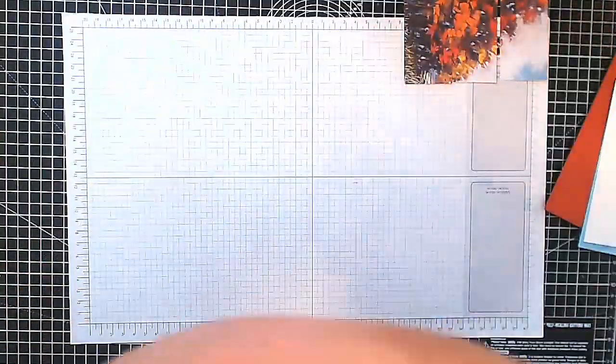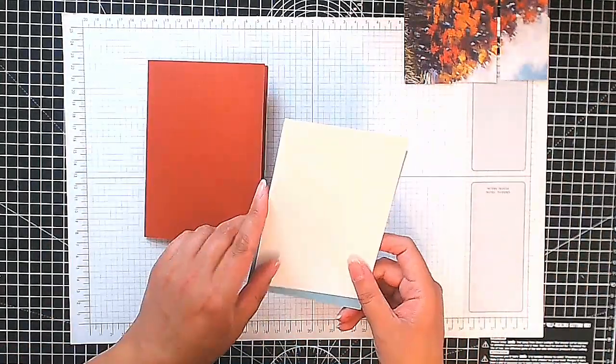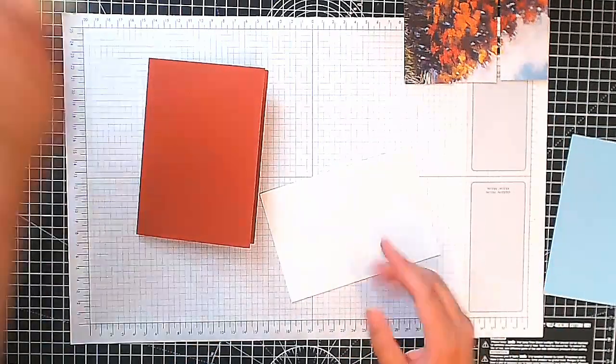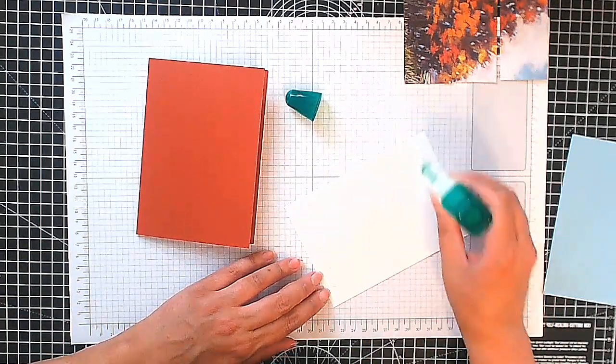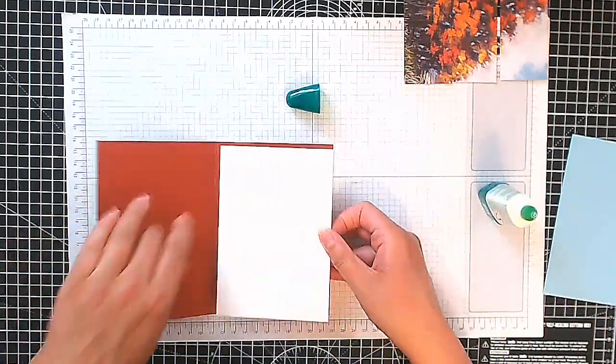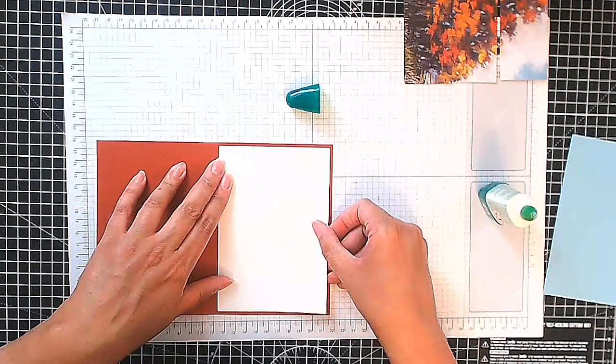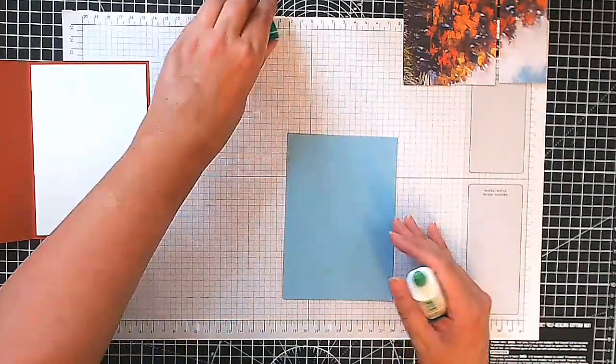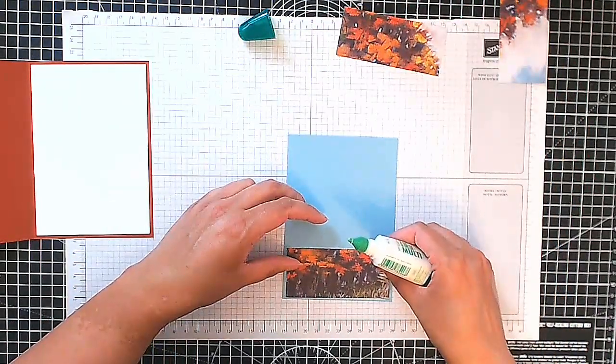Okay. So now our card base is Cajun Craze and it is a standard A6 card base. That's an A4 sheet cut in half and then fold in half. Then I've got a piece of basic white for the insert. And this measures 14.35 by 10. So let's put this on the inside. Now I've got here a piece of balmy blue cardstock. Same measurement as the basic white. Now we're going to stick our pieces here.